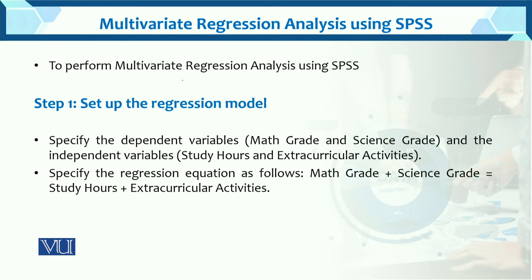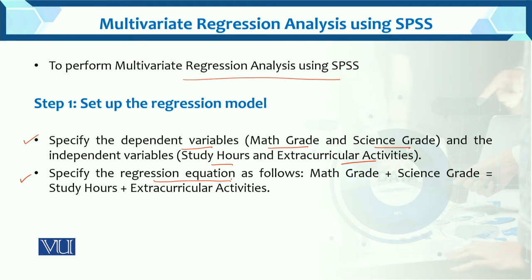To perform multivariate analysis using SPSS, first we specify the dependent variables — in this example, math grade and science grade. The independent variables are study hours and extracurricular activities. Then we specify the regression equation: math grade and science grade as dependent variables, based on study hours (x1) and extracurricular activities (x2) as independent variables.